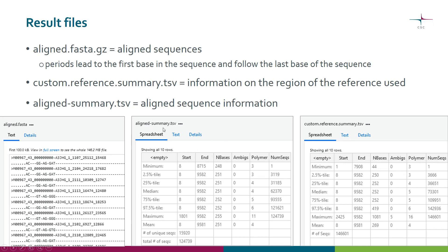You also get two summary files: one for your aligned sequences and one for the reference. The new thing here is that you now have start and end positions, which refer to the start and end position in the alignment. For example, as you can see, most of them start at position 8, but there is at least one sequence whose starting position starts much later.